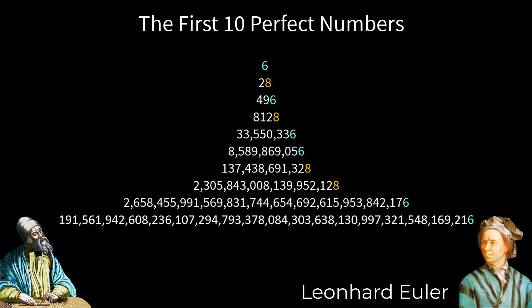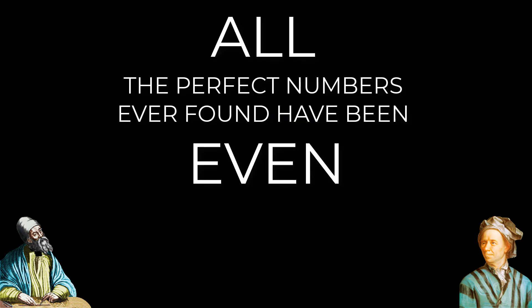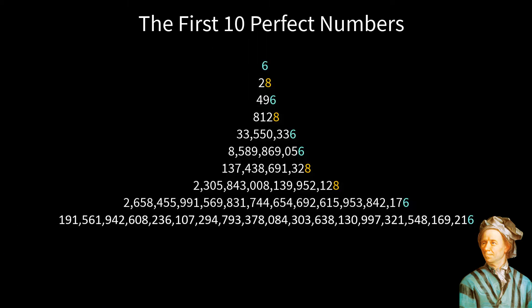Euler contributed something to every part of mathematics. For perfect numbers, he showed that if they're even, they must end in a 6 or 8, which means every perfect number known ends in 6 or 8. Euler also found the 8th perfect number.